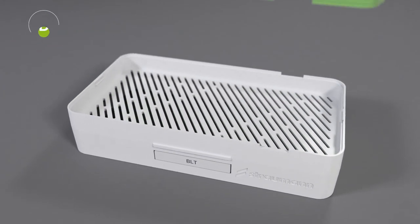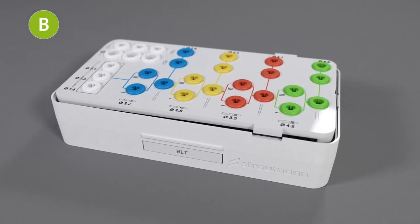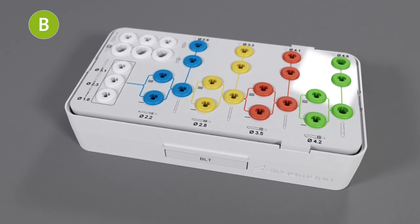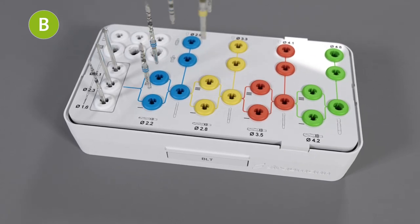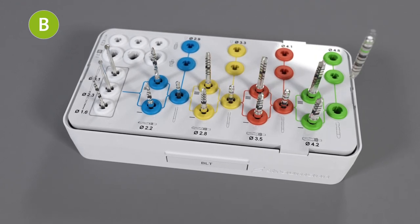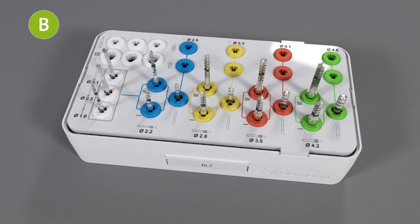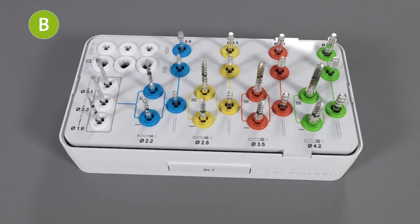Next, the B module. Select the basic tray for the BLT workflow and click into the B module. The tray has three areas. In the lower area, you can find the drills for basic implant bed preparation. Following the color-coded guidelines to the upper area, there are the profile drills and taps.